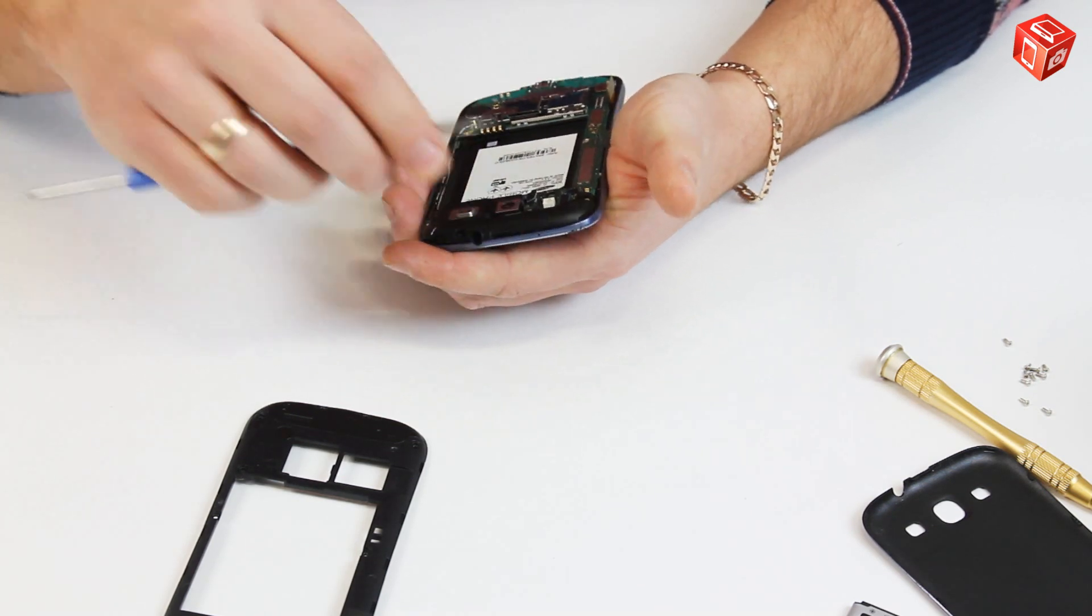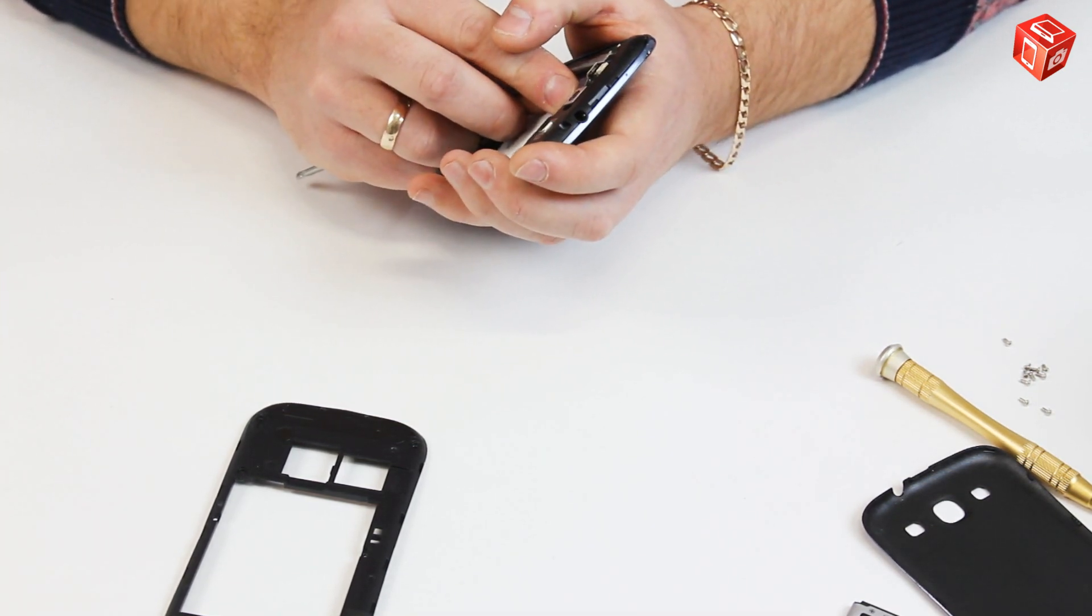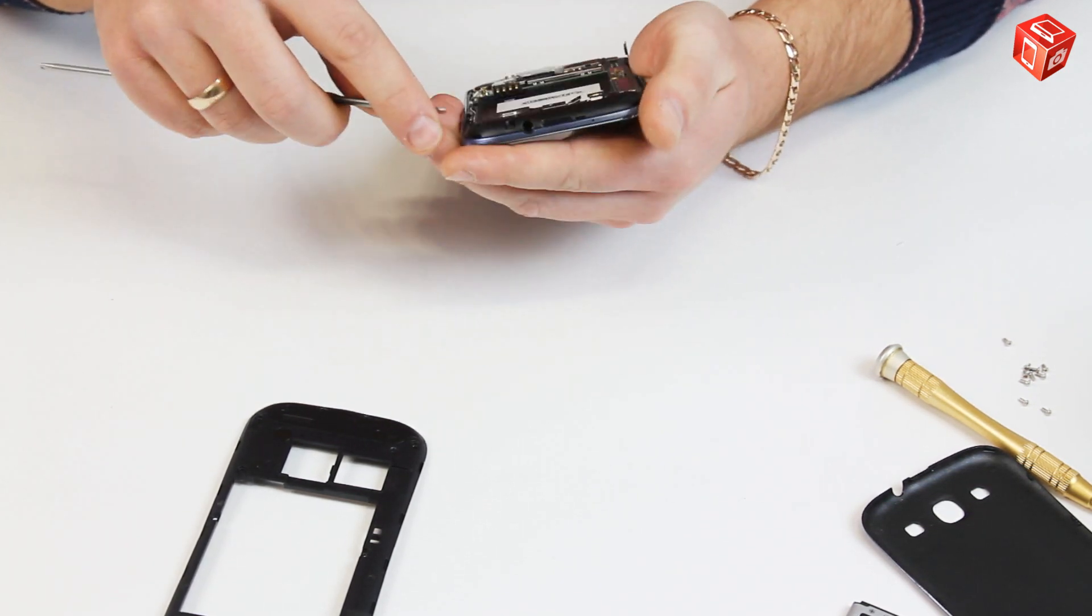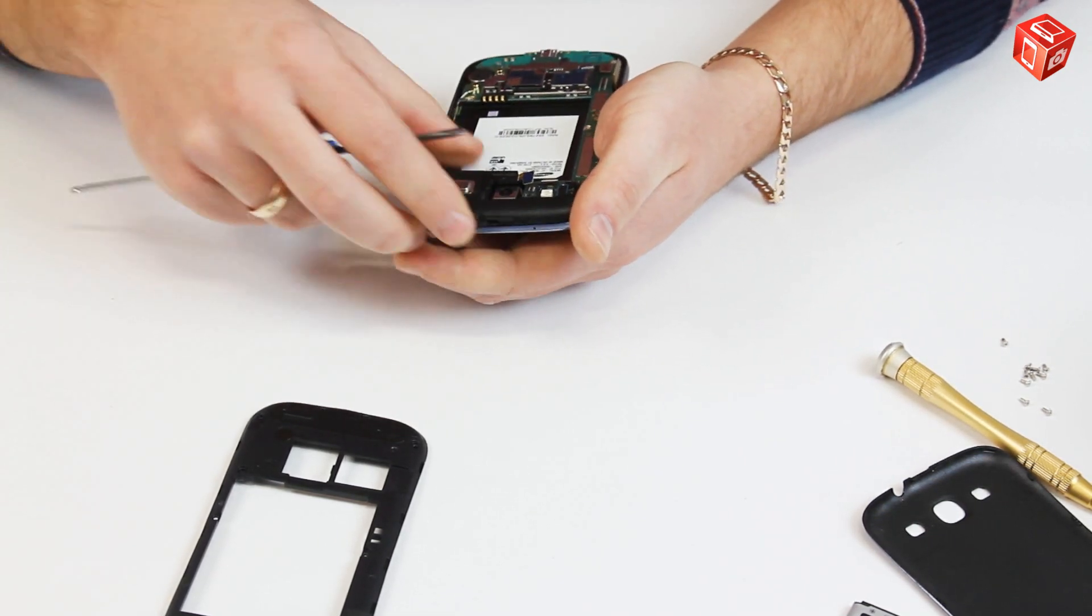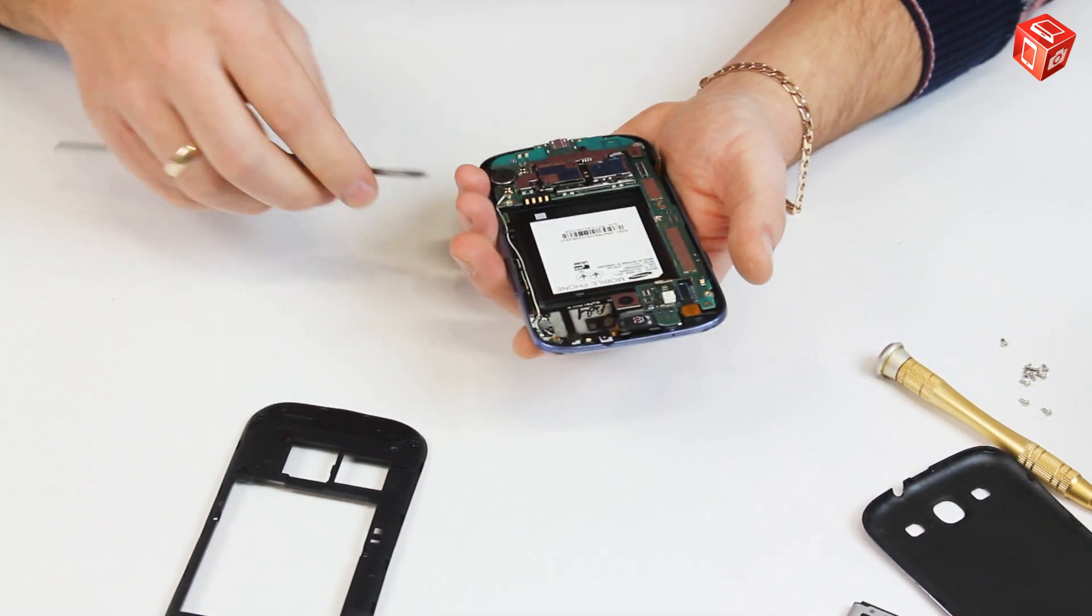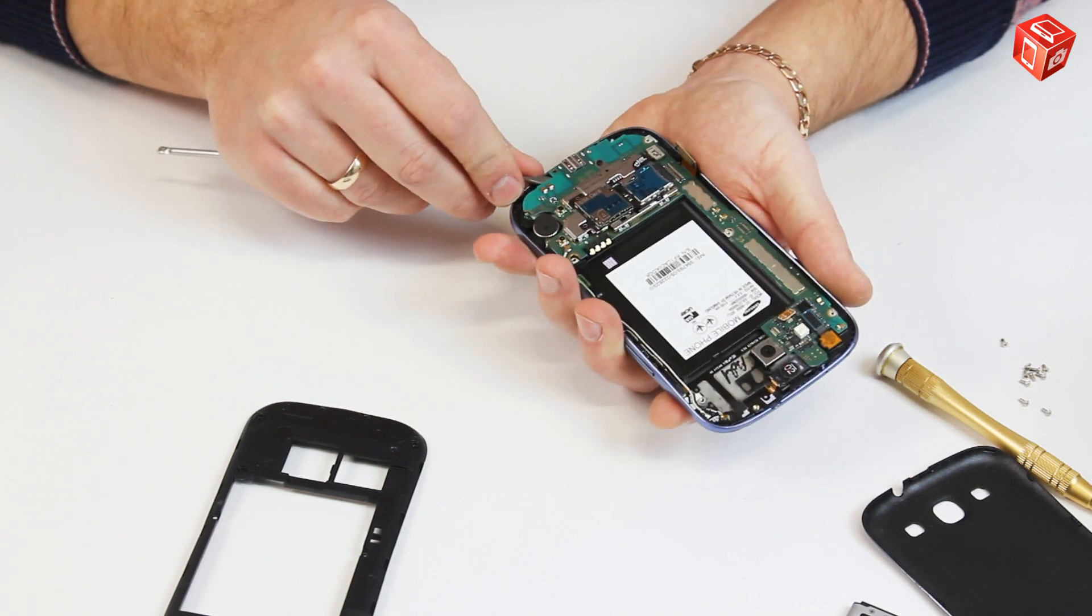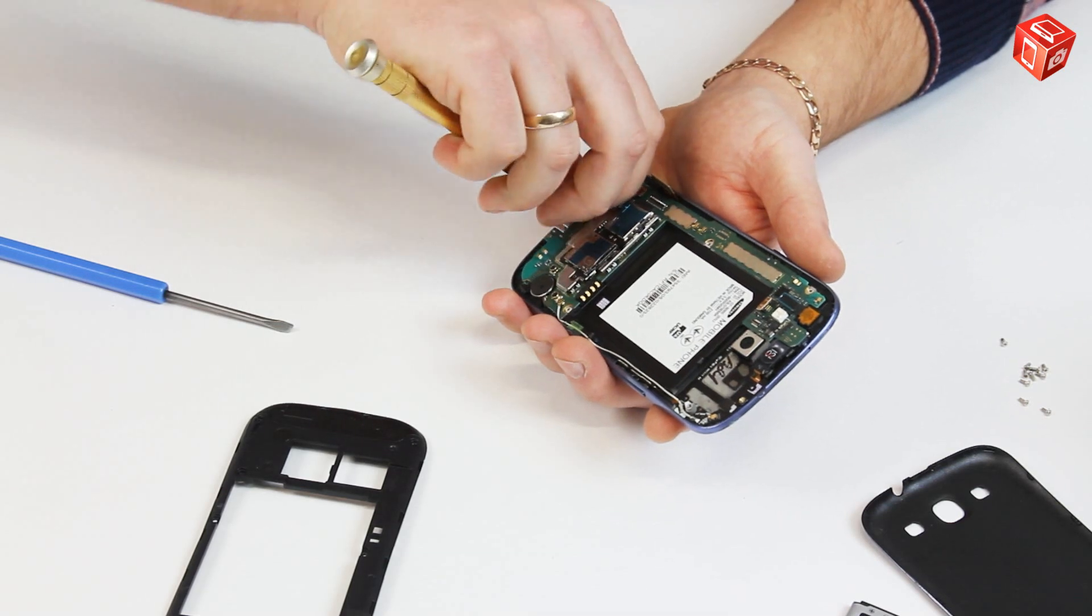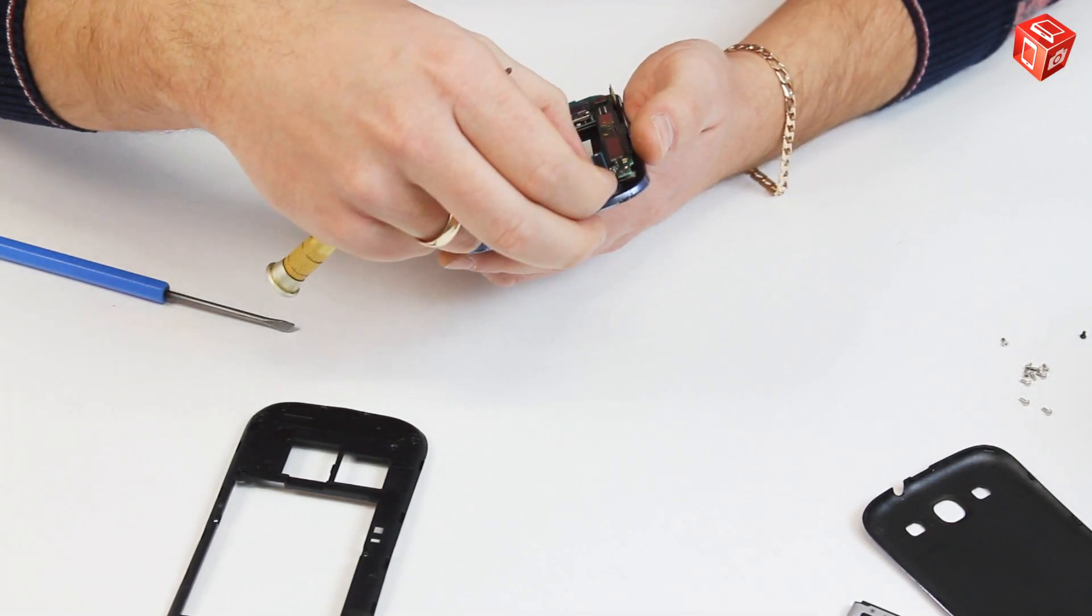Take off the call module and the main board. Don't forget to unscrew the main board holding screw, situated to the left from the charger connector, as shown on the video.